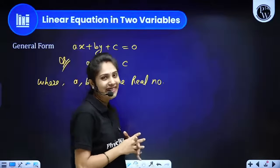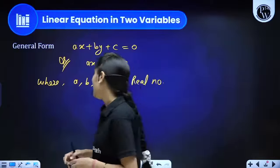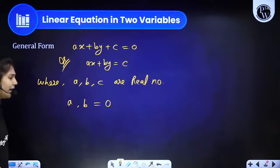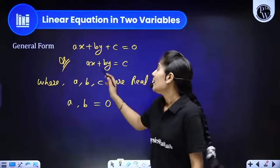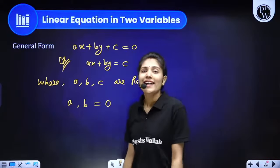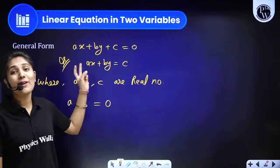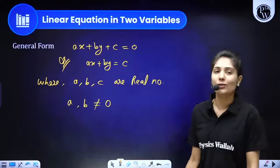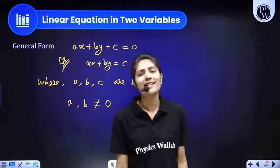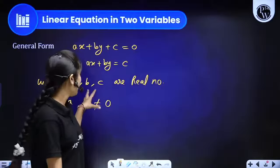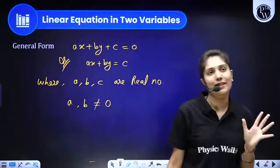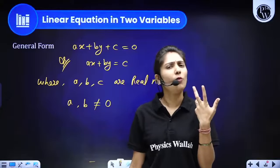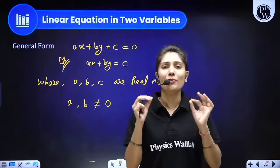One important note: if we take a or b equal to zero, then the x or y term would disappear — so a and b cannot be zero. Remember: a, b, c are real numbers, and a and b cannot be zero because if they were, x and y terms would not remain. However, c can be zero — the constant can be anything, it doesn't matter.